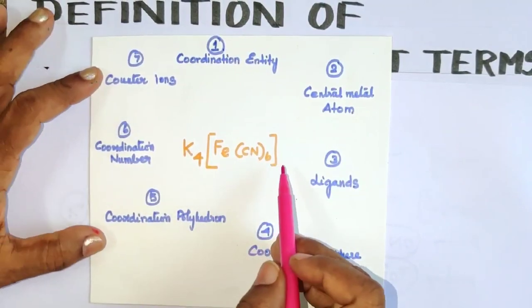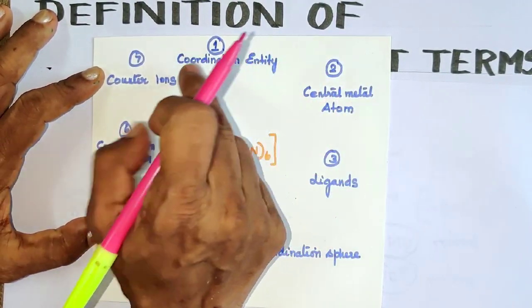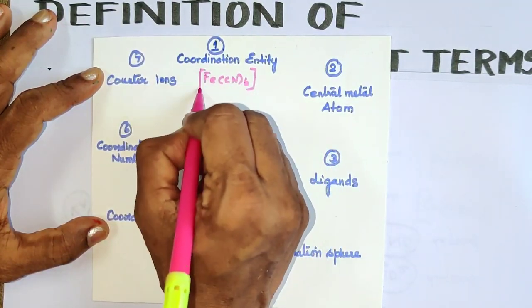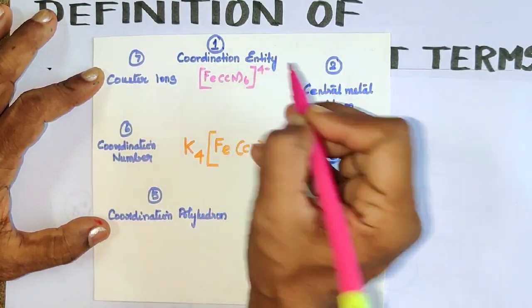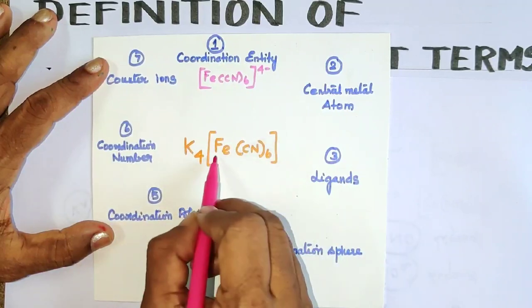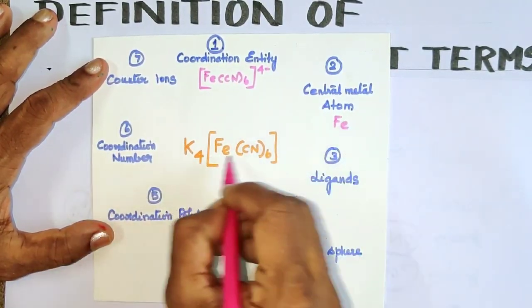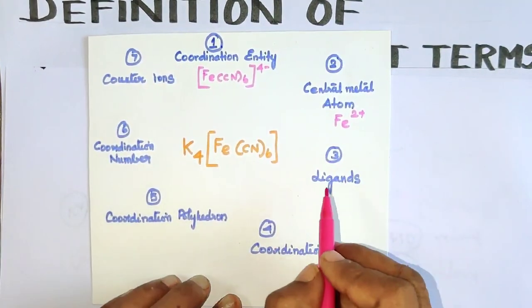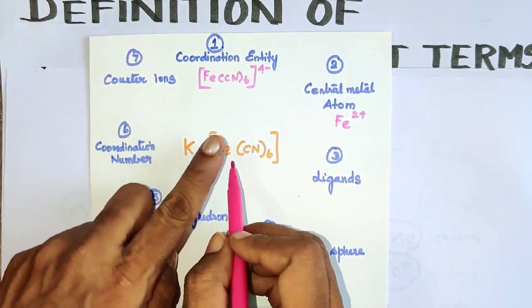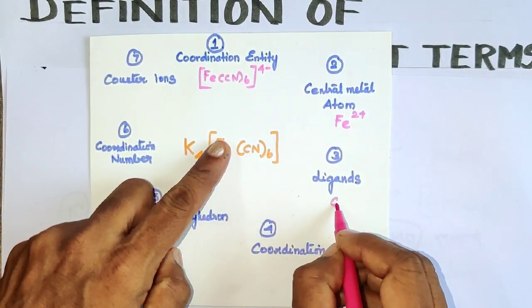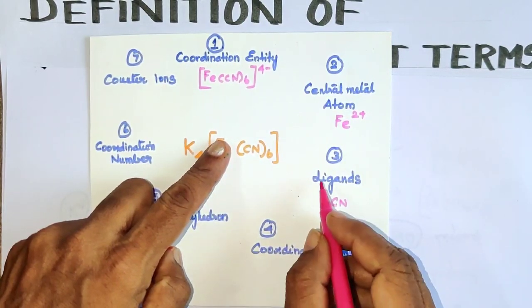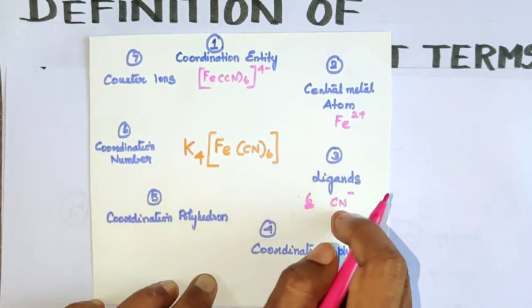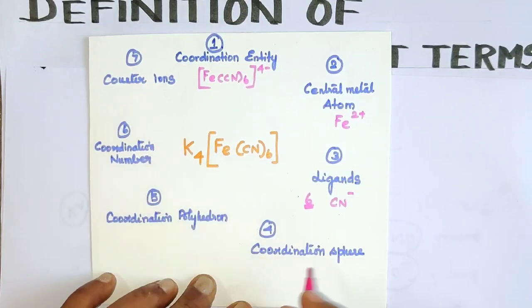Let's summarize all terms using K4[Fe(CN)6] as an example. The coordination entity is [Fe(CN)6] with a net charge of 4 minus. The central metal atom is Fe with charge 2 plus (oxidation state covered in next video). The ligands are CN minus - there are 6 CN minus ligands in the coordination sphere inside the square brackets. The coordination number is 6 since CN minus is a simple monodentate ligand and there are 6 of them. The counter ions are the 4 K+ potassium ions outside the coordination sphere.